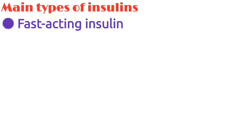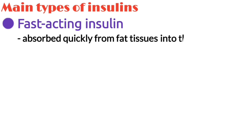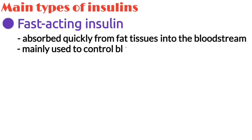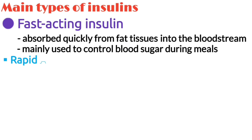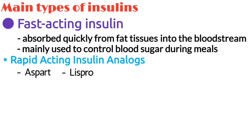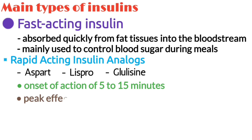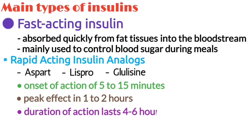There are three main types of insulin. First, fast-acting insulin, which is absorbed quickly from fat tissues into the bloodstream. It is mainly used to control blood sugar during meals and to correct high blood sugars. This includes rapid-acting insulin analogs such as insulin aspart, insulin lispro, and insulin glulisine, which have an onset of action of 5–15 minutes, peak effect in 1–2 hours, and duration of action of 4–6 hours.